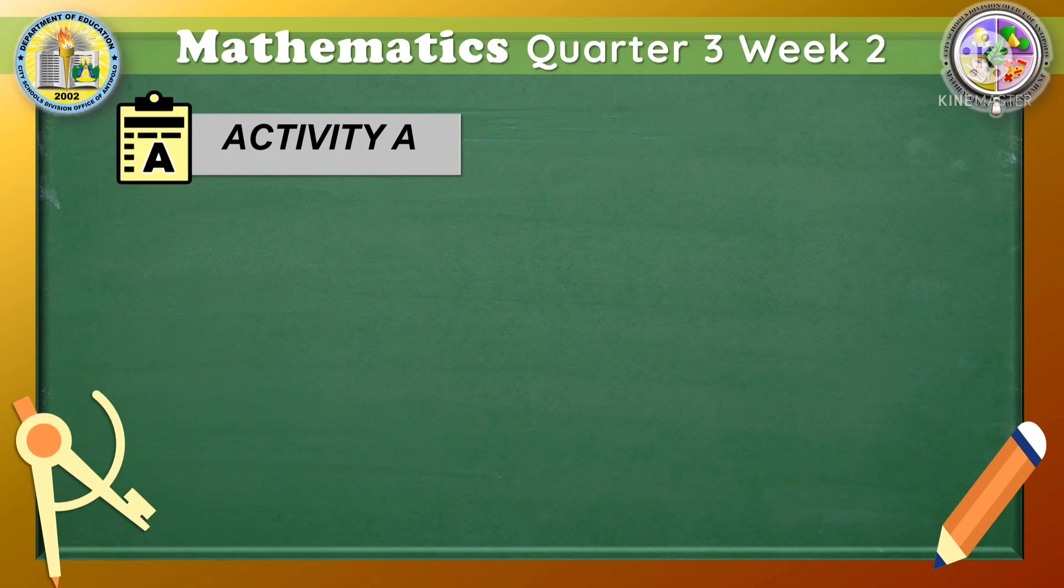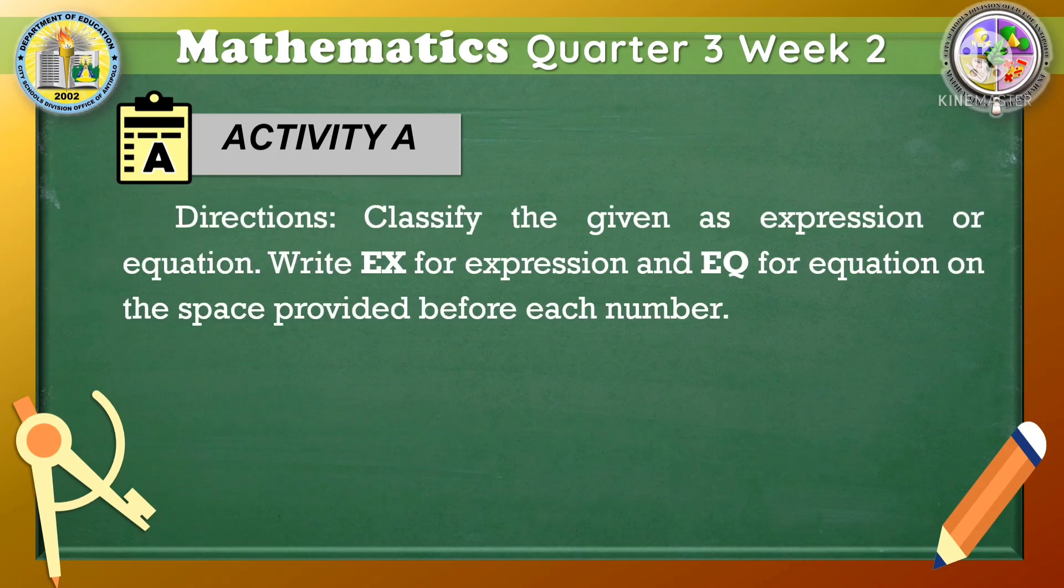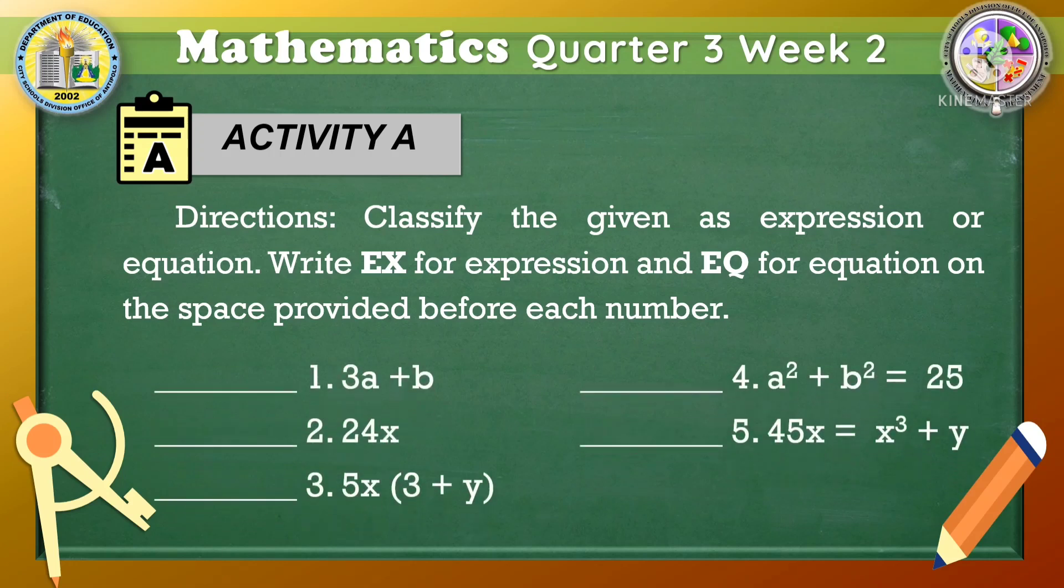Next, let's apply what you have learned by answering activity A. Directions: classify the given as expression or equation. Write EX for expression and EQ for equation on the space provided before each number. Here are the given 5 items.